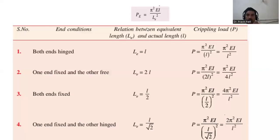This is Euler's crippling load. It is P is equal to pi square EI divided by LE square.